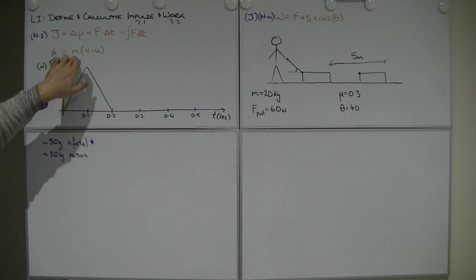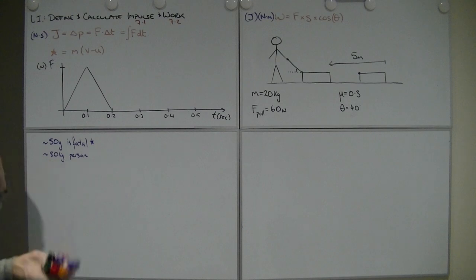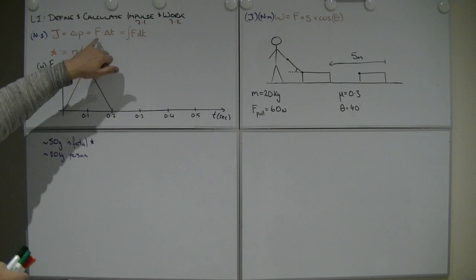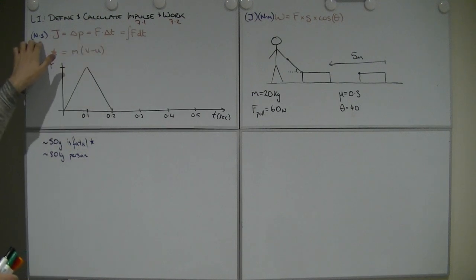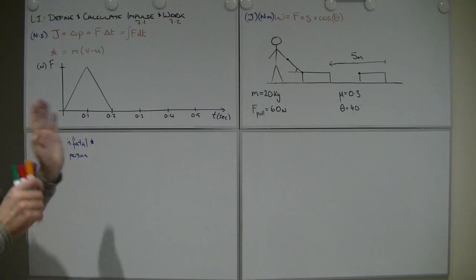So long as your mass is constant throughout everything, which makes sense for one body, but sometimes if you've got pieces flying off, not so relevant. Since we've got force multiplied by change in time, that gives rise to the units, newtons per second.